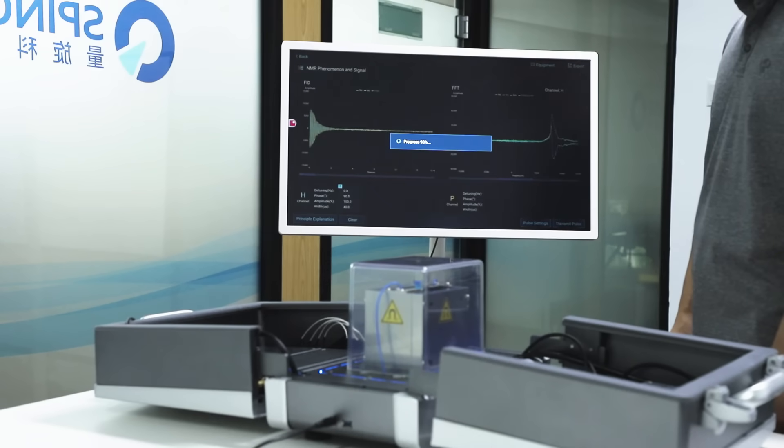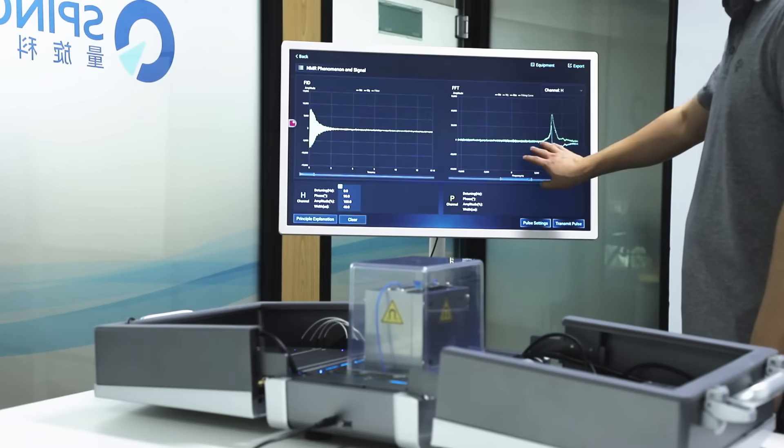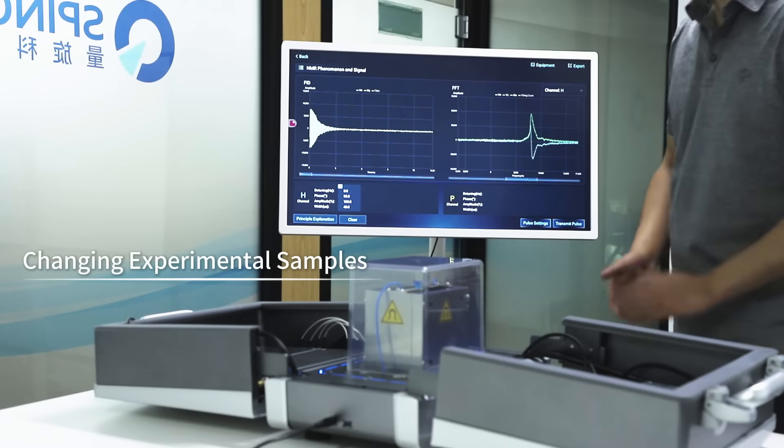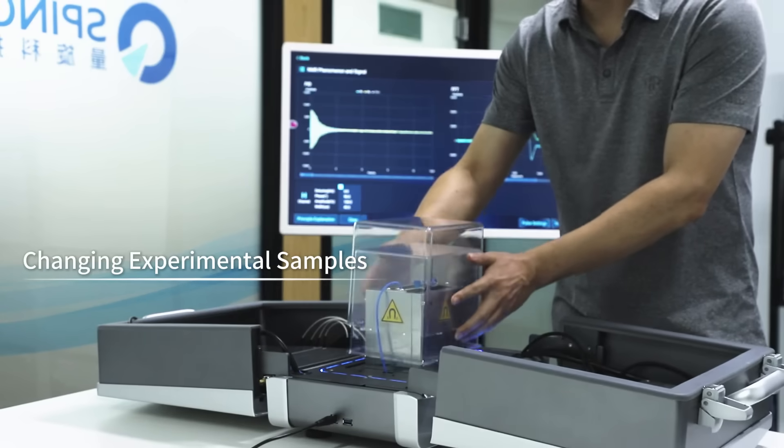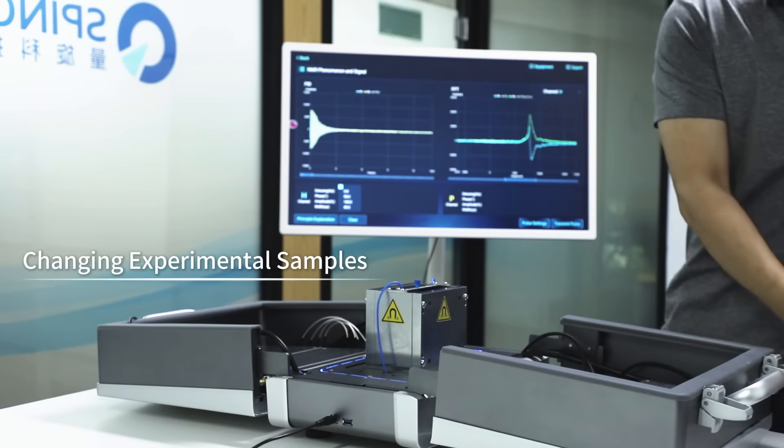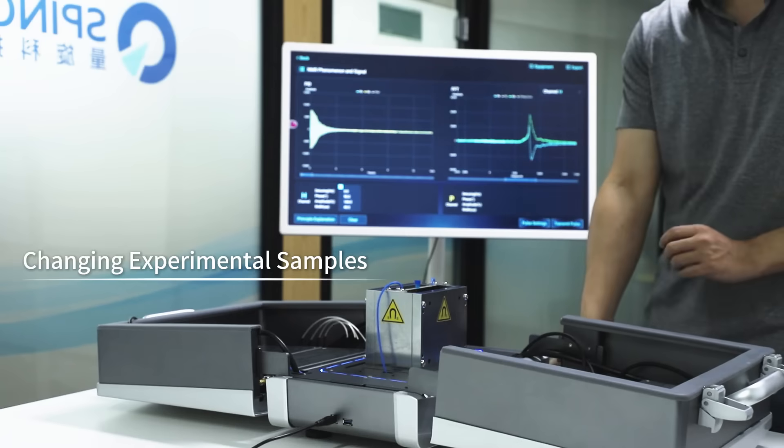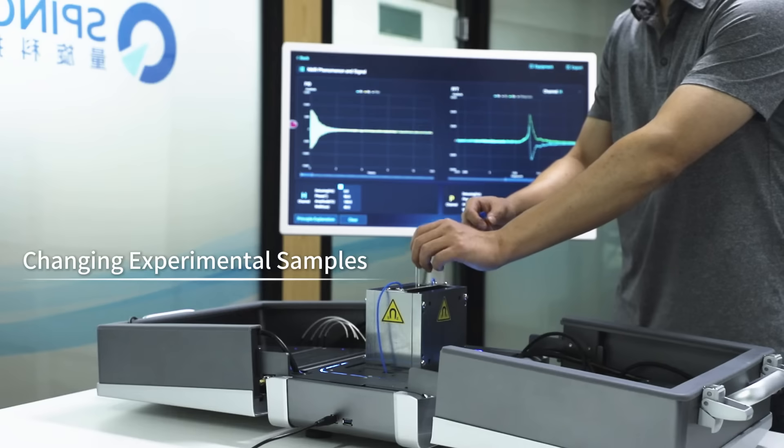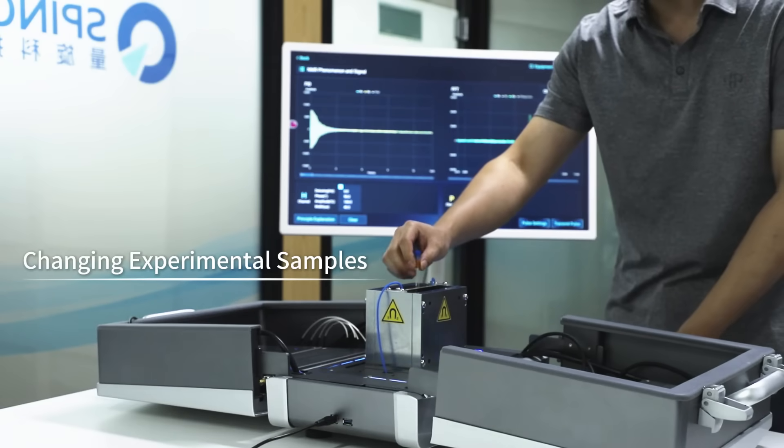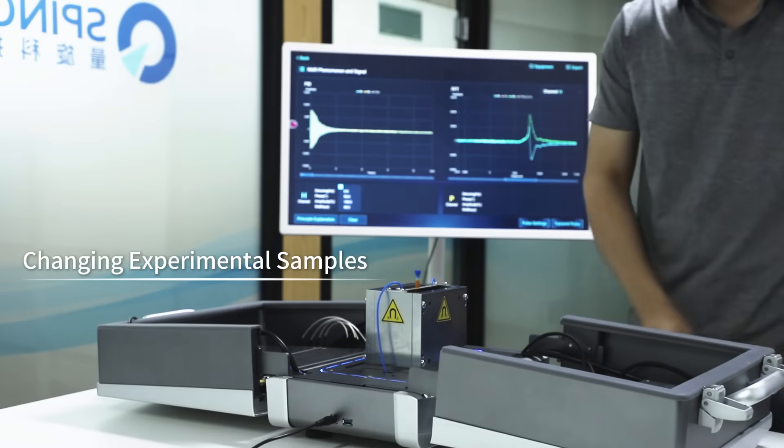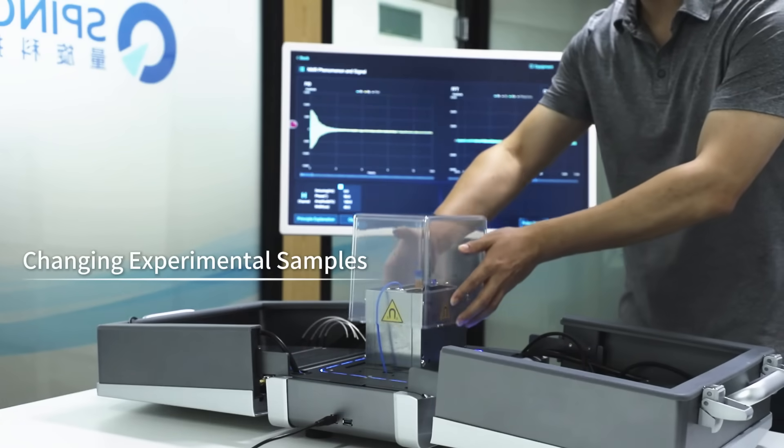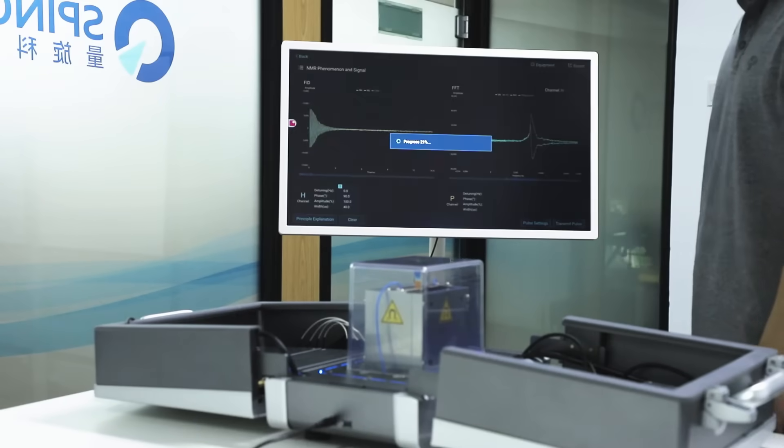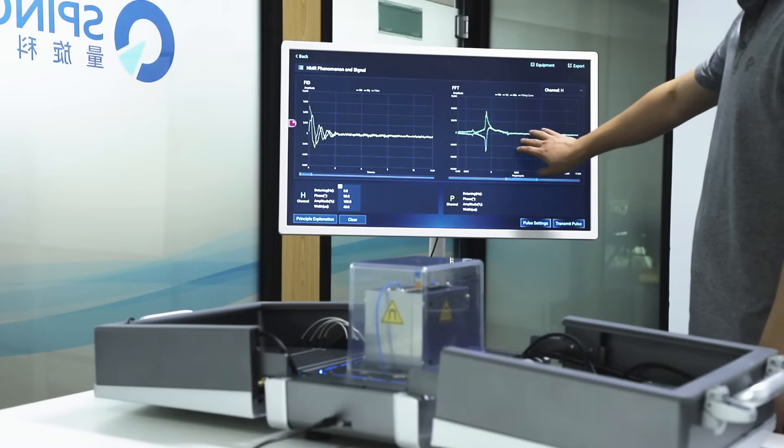The interface will display real experimental data. There are several different samples available for changing according to the requirement of experiments. When changing samples, open the protective cover of the magnet module, replace the sample tube, and then control different qubits in specific experiments to observe various experimental phenomena.